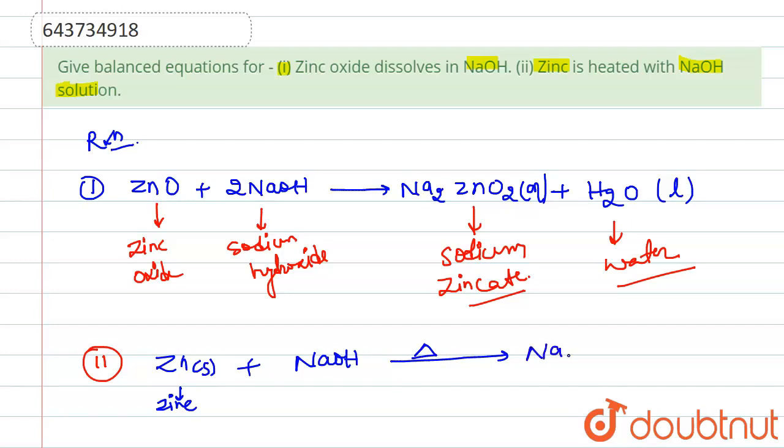this will form Na2ZnO2 plus hydrogen gas.